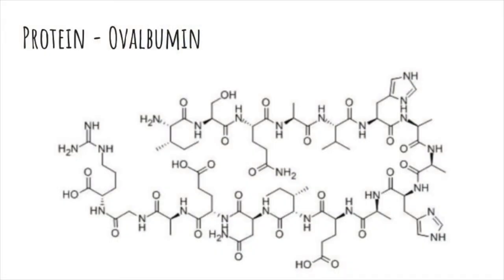Eggs, especially the egg whites, are rich in proteins. And these proteins cause the egg to become hard when they're boiled. A protein is a chain of amino acid strings that fold back on themselves and are held in place by weak bonds. When you break those strings by various methods, you're denaturing the protein.